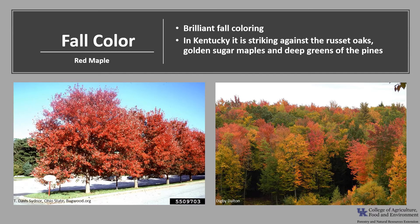In Kentucky it's just as striking against the russet oaks, golden sugar maples, and deep greens of our pines. Red maple has long been a valued ornamental tree due to its brightly red colored spring flowers, its reddish fruit, outstanding fall color, rapid growth, and ease of establishment. It's a nice addition to any landscape.